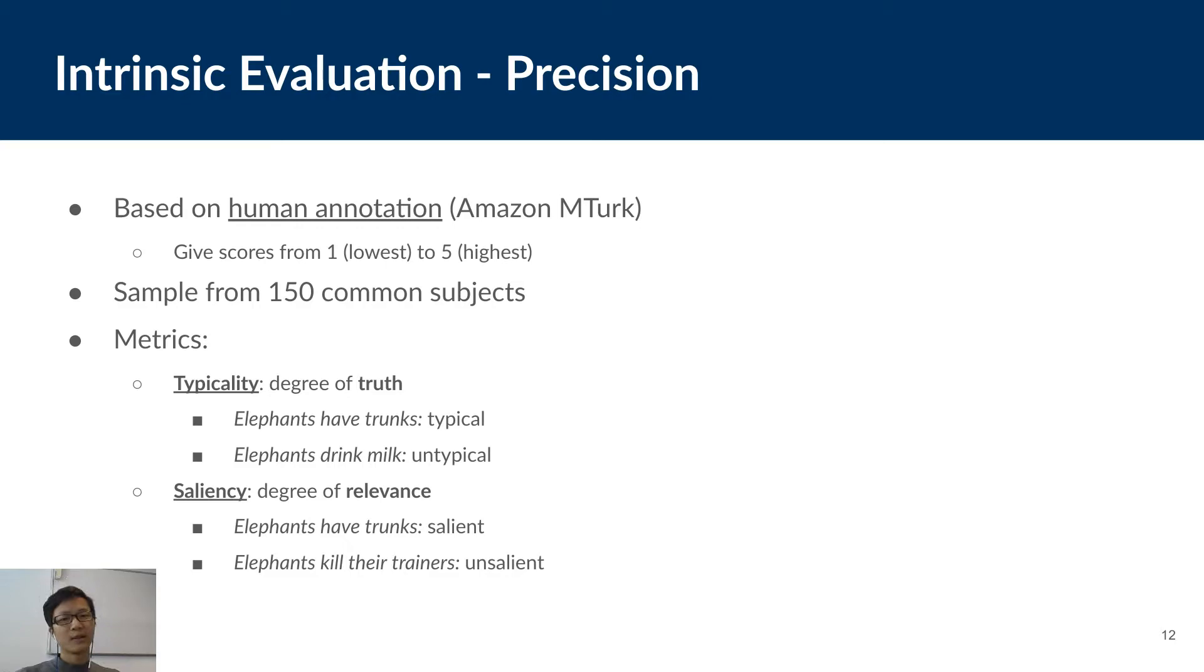So, to evaluate the quality of assertions, we asked crowd workers from the Amazon Mechanical Turk platform to give scores to the assertions along two dimensions, typicality and saliency, based on a scale from 1 to 5. So, typicality states that an assertion holds for most instances of a concept. For example, elephants having trunks is typical, but elephants drinking meal is not, because that's only valid for baby elephant. Saliency refers to the human perspective of whether an assertion is associated with a concept by most humans on first thought. For example, elephants having trunks is salient, but the elephants killing their trainers is not salient, because it does not happen so frequently.